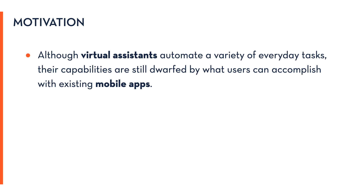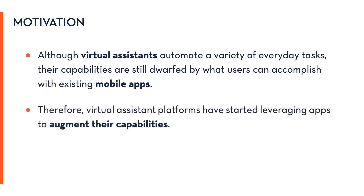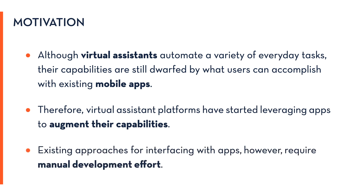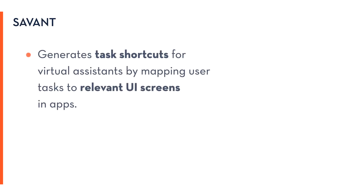Although virtual assistants automate a variety of everyday tasks, their capabilities are still dwarfed by what users can accomplish with existing mobile apps. Therefore, virtual assistant platforms have started leveraging apps to augment their capabilities. Existing approaches for interfacing with apps, however, require manual development effort. We present Savant, a system that automatically generates task shortcuts for virtual assistants by mapping user tasks to relevant UI screens in apps.